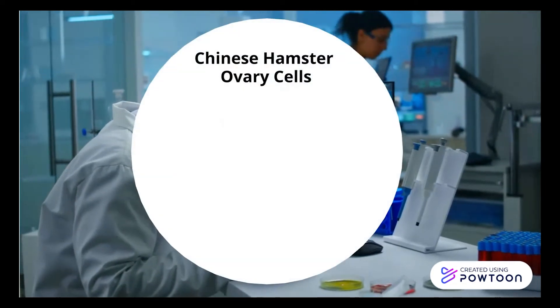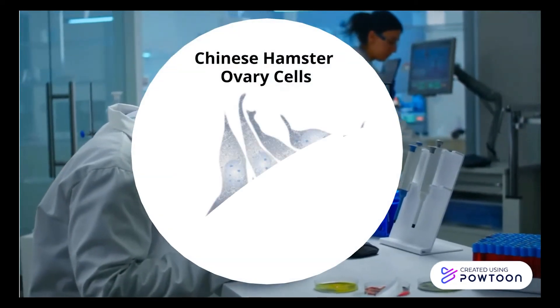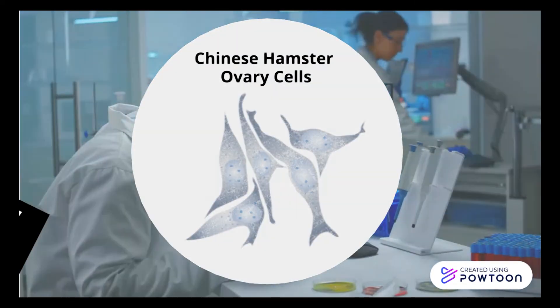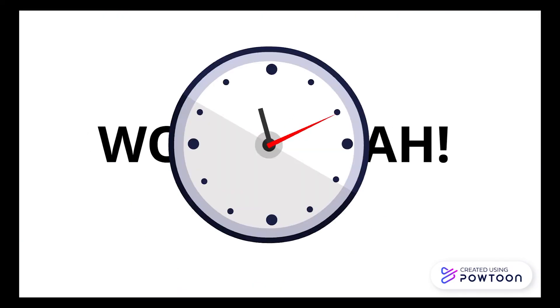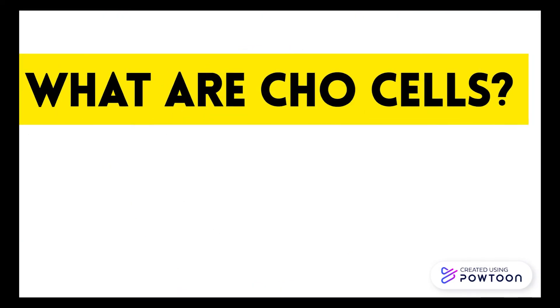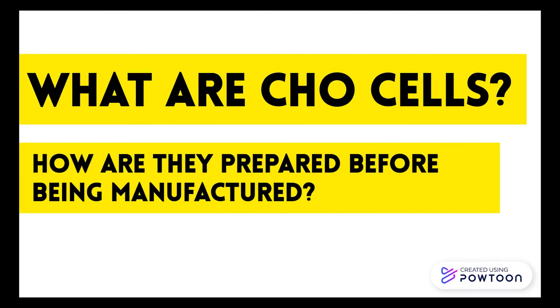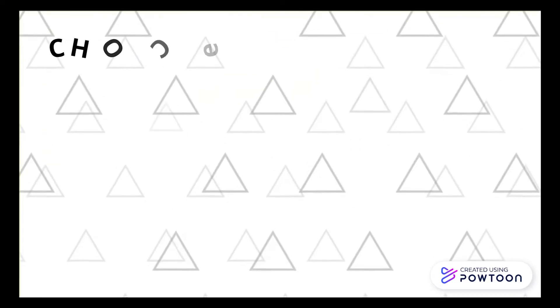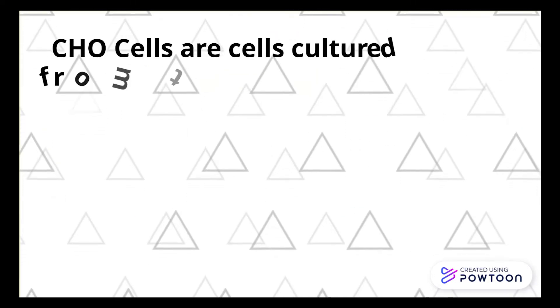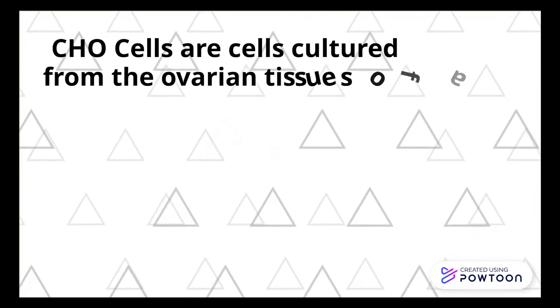Whoa — rewind. What are CHO cells and how are they prepared before being manufactured? We will start from the very beginning. CHO cells are cells cultured from different tissue of a female Chinese hamster.